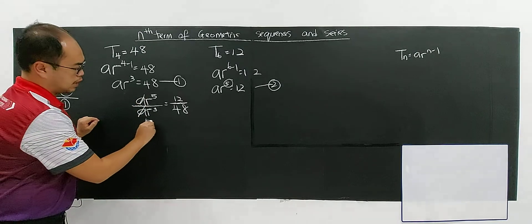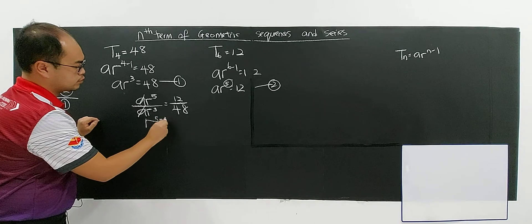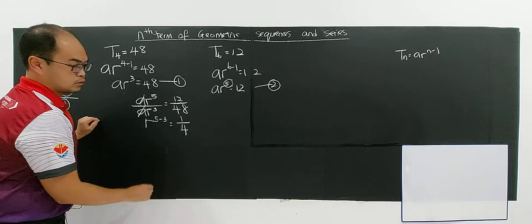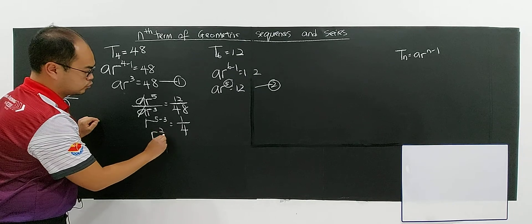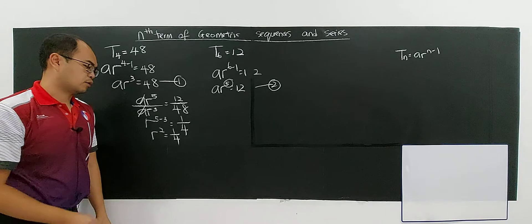The a's cancel off. So r^(5-3) - when you divide indices - equals 1 over 4. You have r² = 1/4.